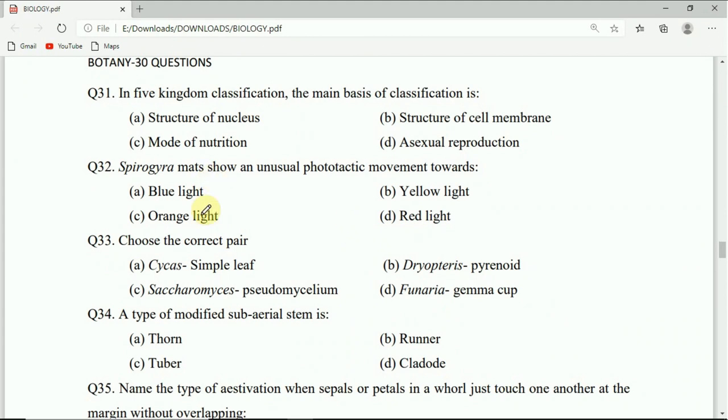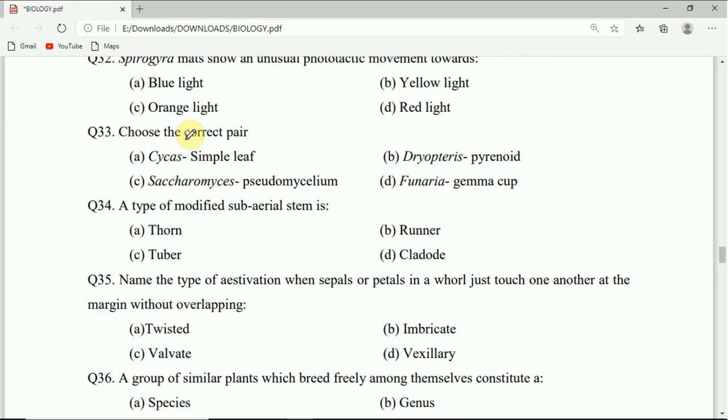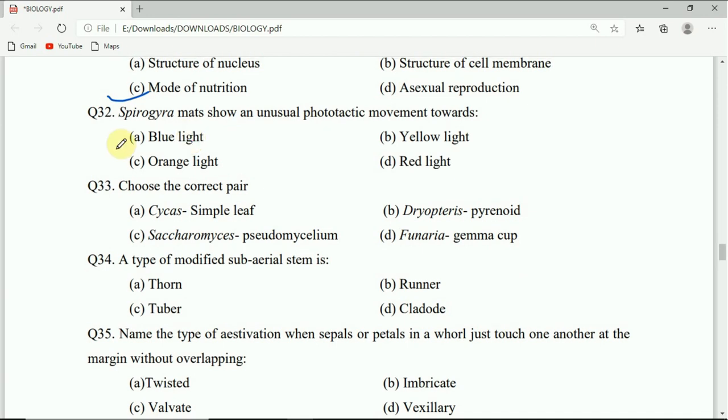Question number 31: In five kingdom classification, the main basis of classification is structure of nucleus, structure of cell membrane, mode of nutrition, or asexual reproduction. Correct answer is mode of nutrition.